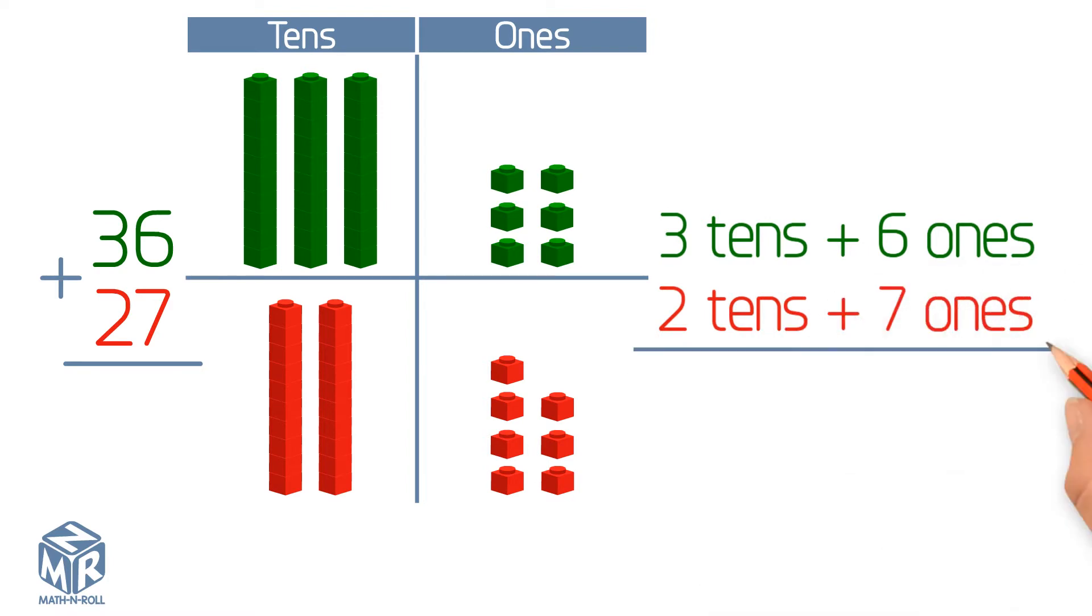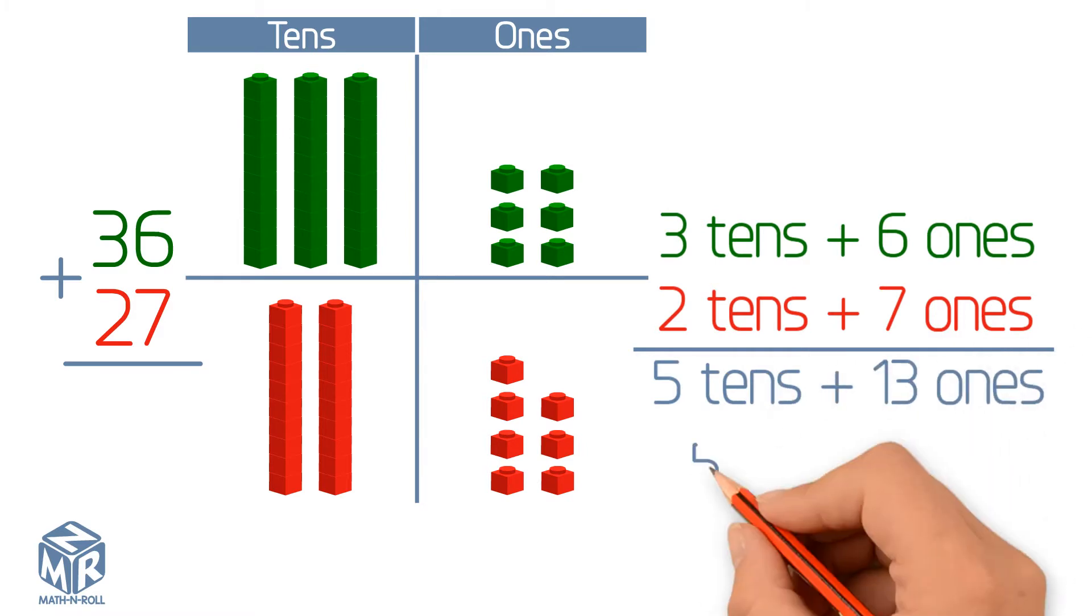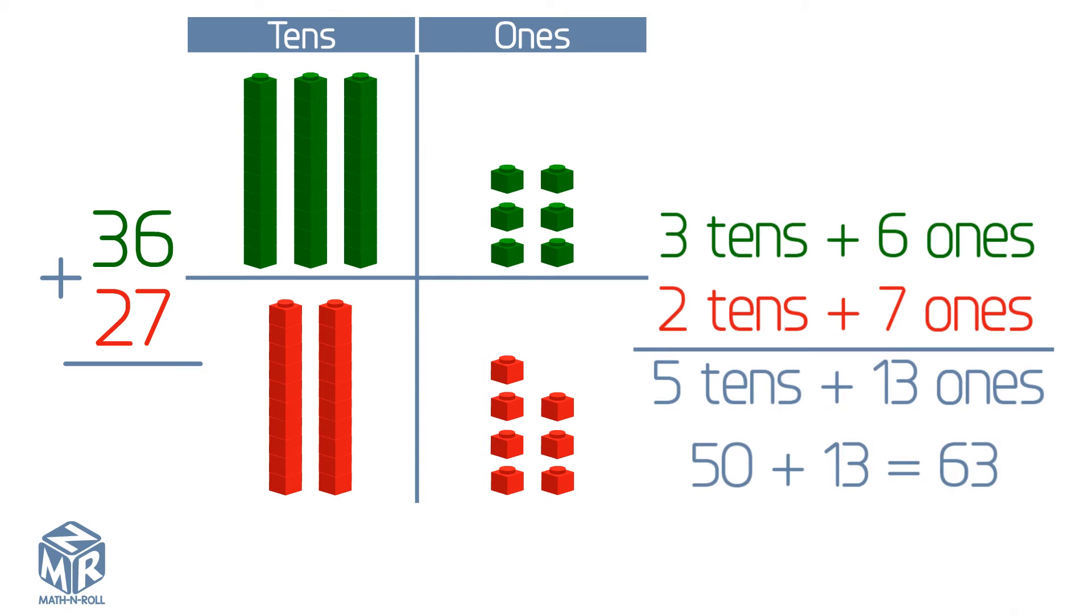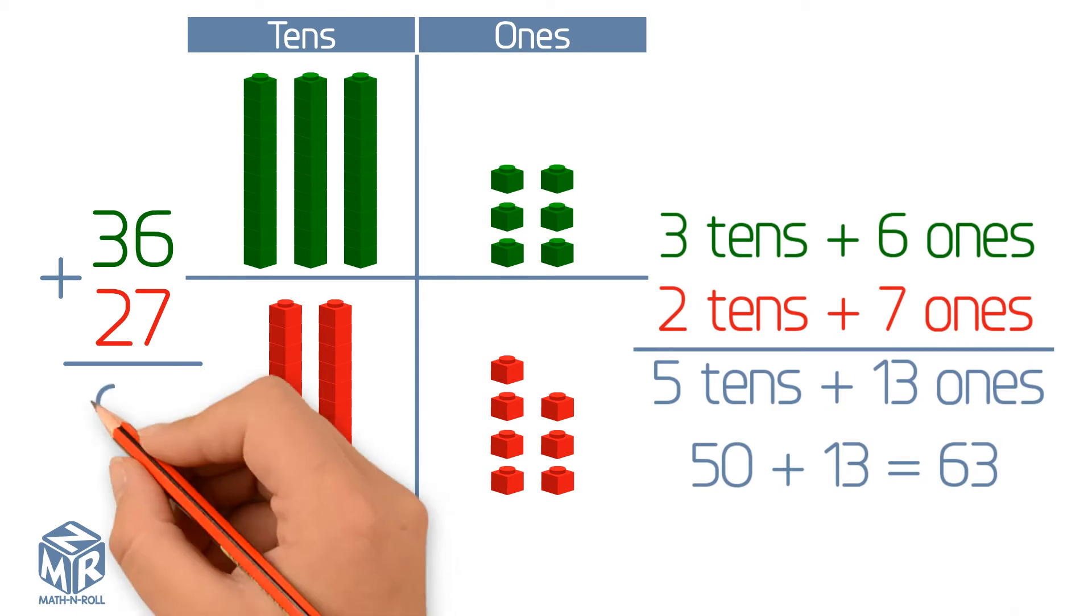Let's add them together. We get five tens and 13 ones, or 50 plus 13, which equals 63. So 36 plus 27 equals 63.